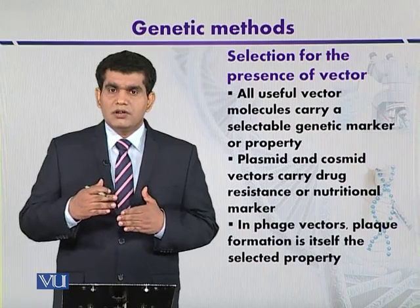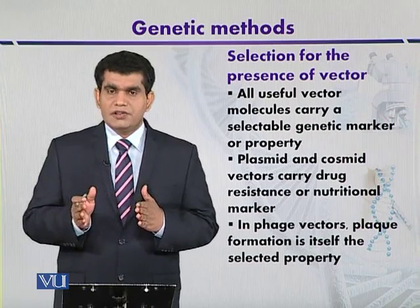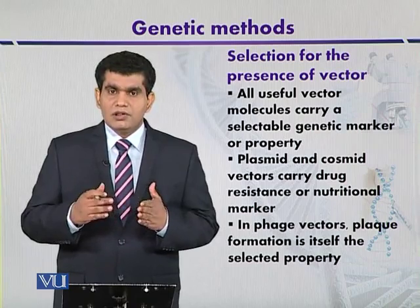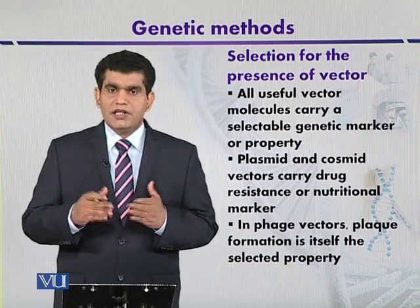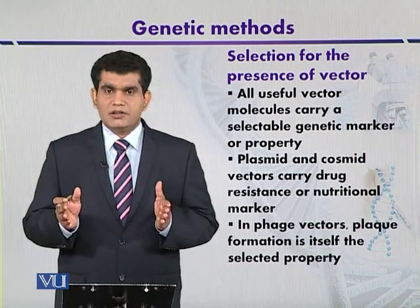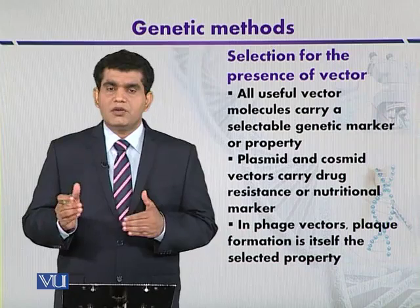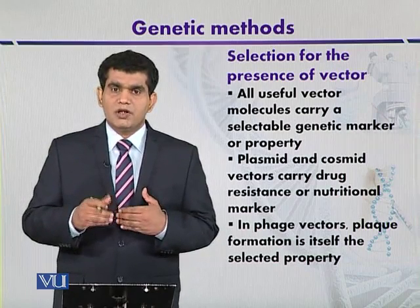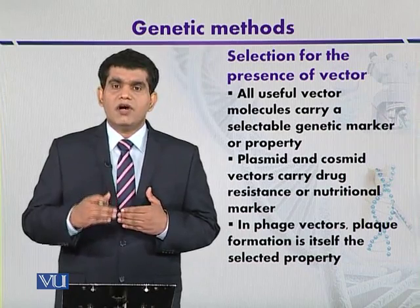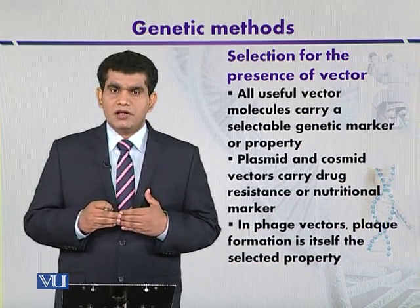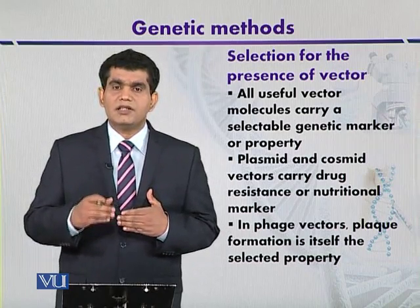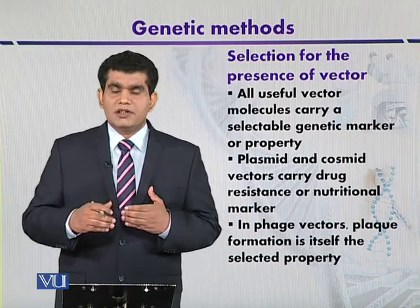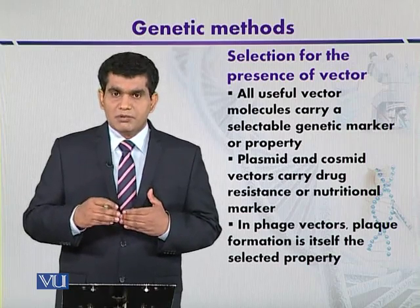Those phages that contain only the viral DNA arms — the right or left arm — without insertion of foreign DNA are too small to be packaged, so viable phages will not be produced. Therefore, the size of the genomic DNA acts as a selectable marker.